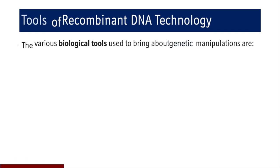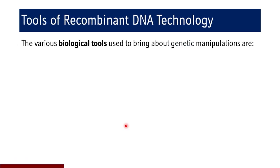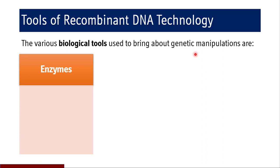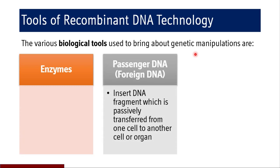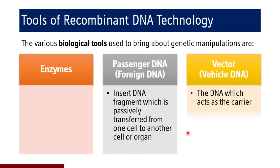Coming to the tools of recombinant DNA technology, there are various biological tools used to bring about genetic manipulations, and these are mainly enzymes. There are passenger DNAs — these are insert DNA fragments which are passively transferred from one cell to another. There is also a vector DNA or vehicle DNA which acts as a carrier of the foreign DNA. These are the three important tools of recombinant DNA technology.